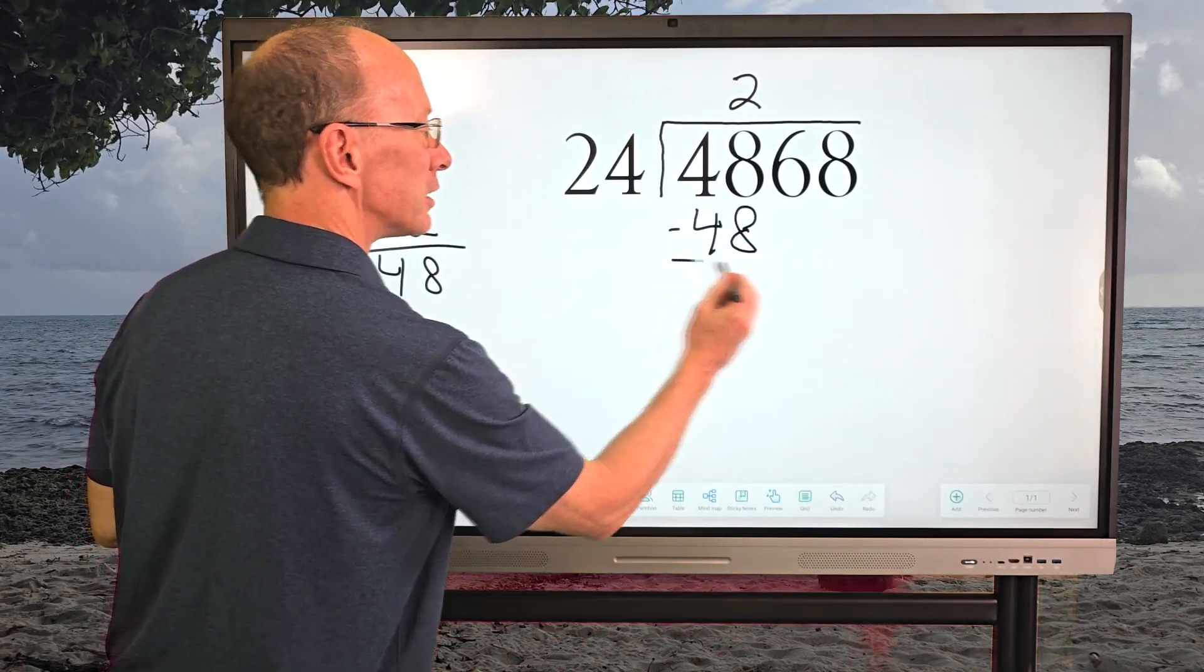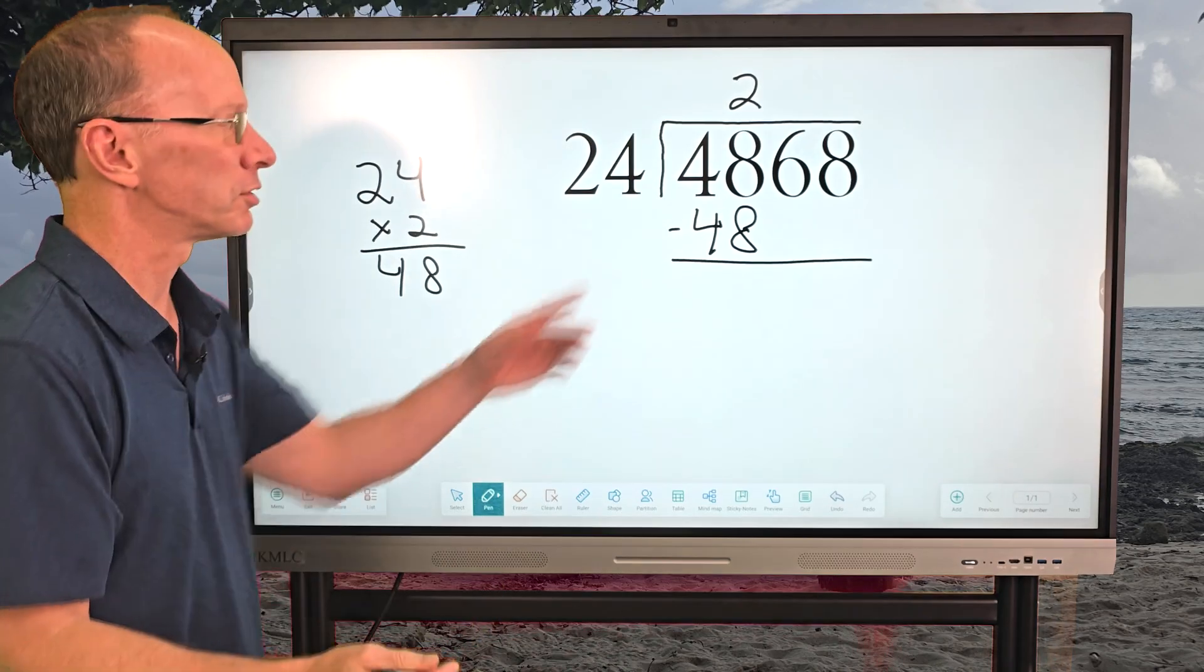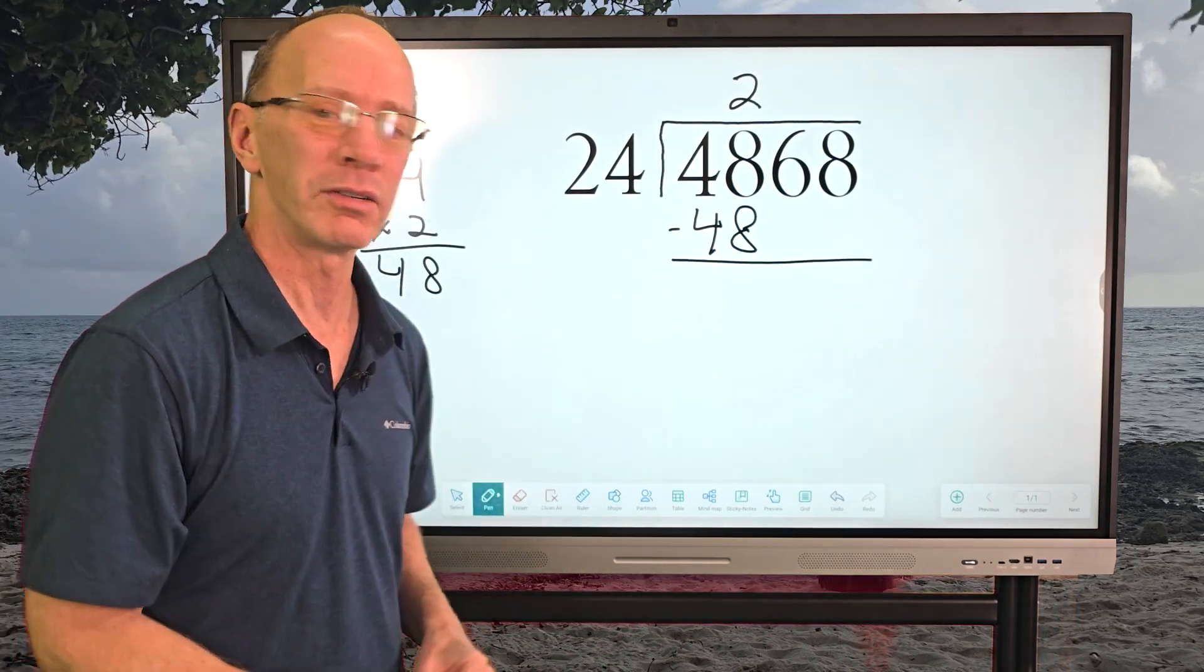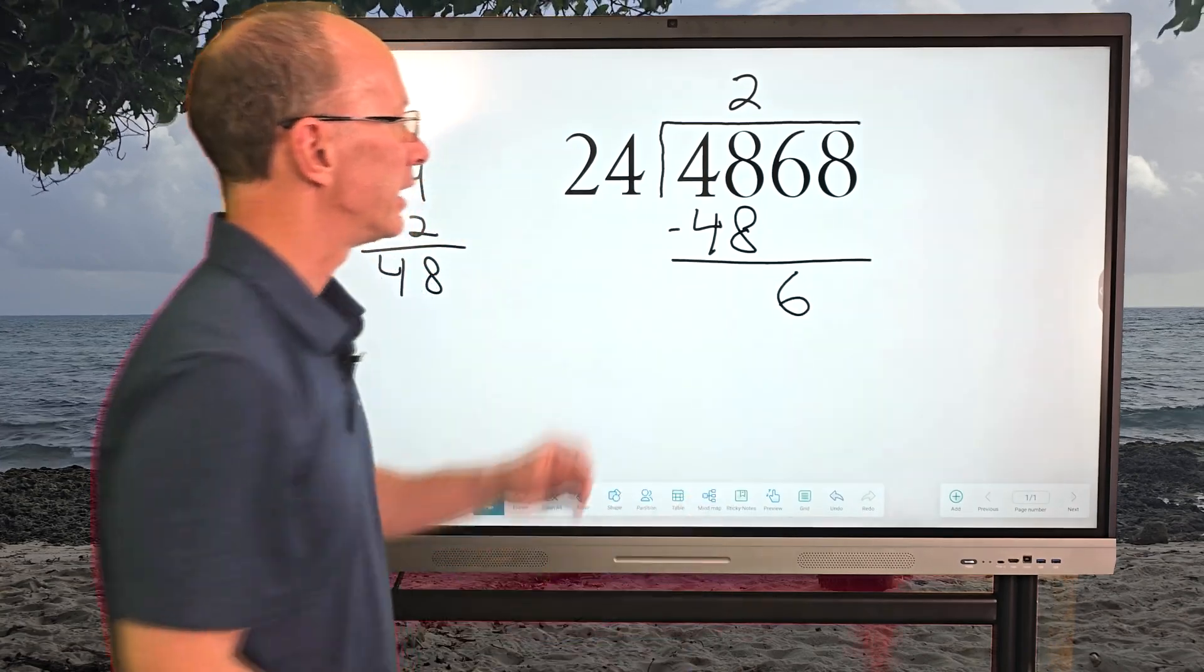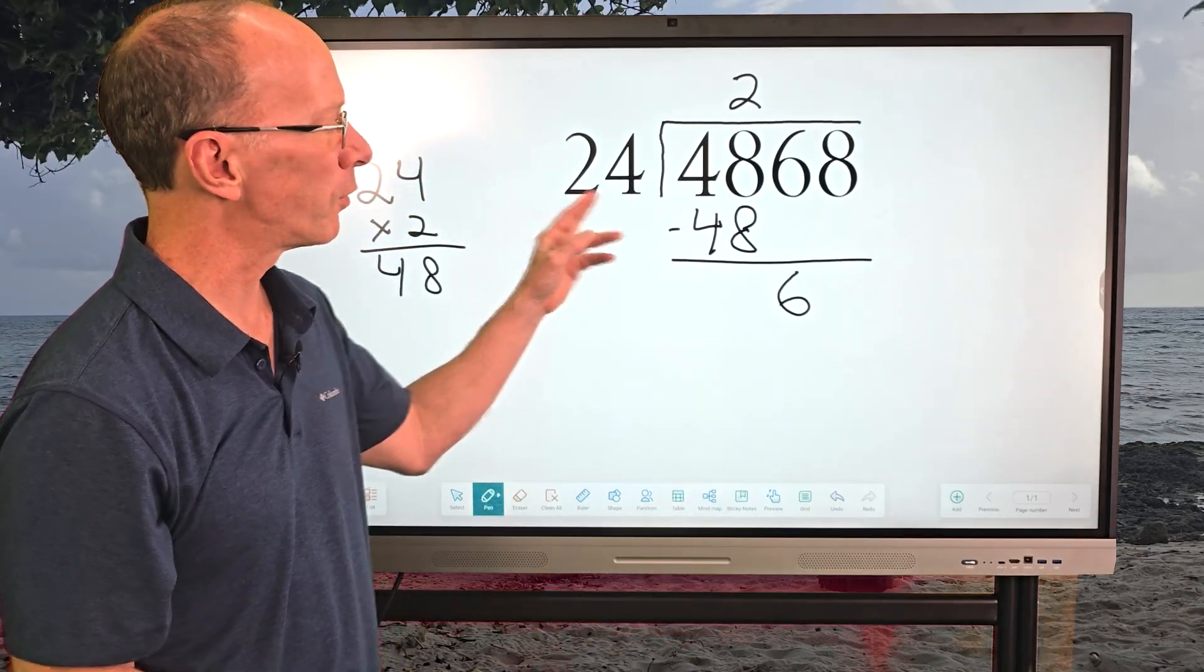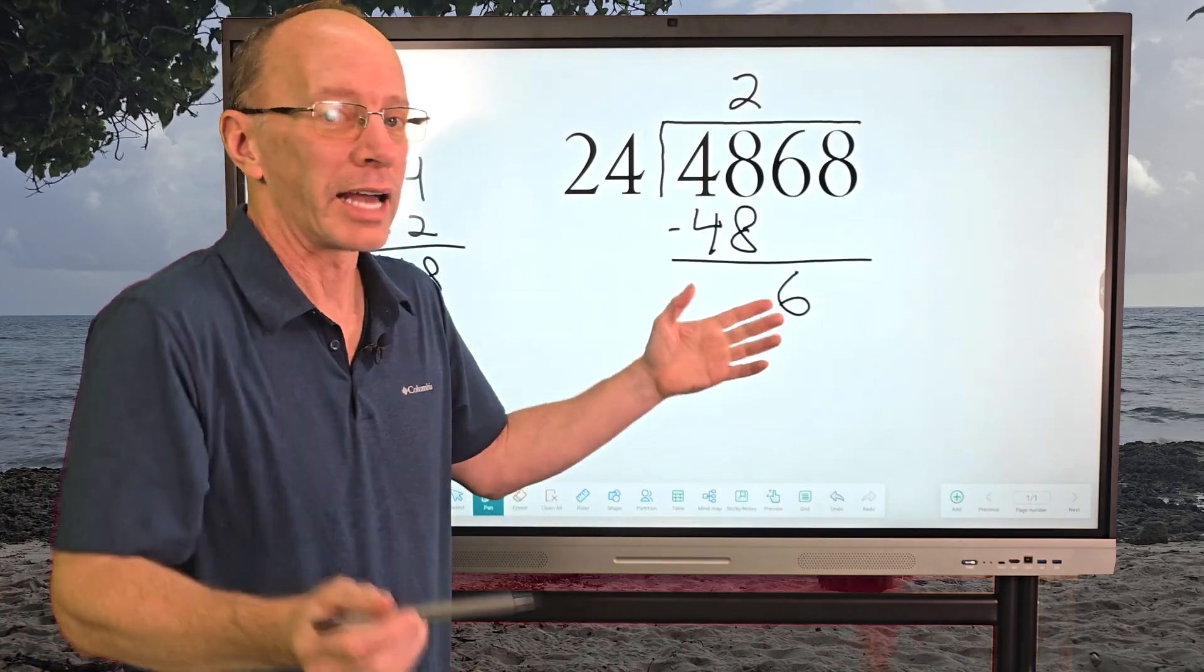And then I'm going to go ahead and subtract. 8 minus 8 is 0, 4 minus 4 is 0. And then I just bring down the next number, which would be 6. And now how many times can I put 24 into 6? I can't, can I?